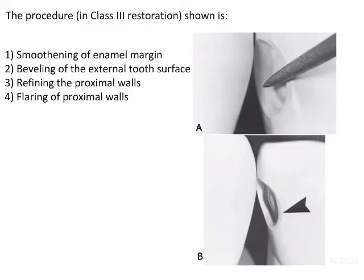The question here is the procedure in Class III restoration shown. The options are smoothening of enamel margin, beveling of the external tooth surface, refining the proximal wall, and flaring of proximal walls.